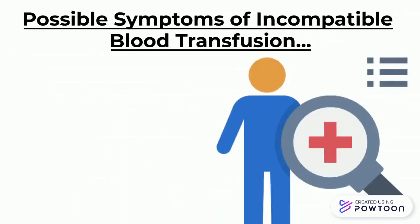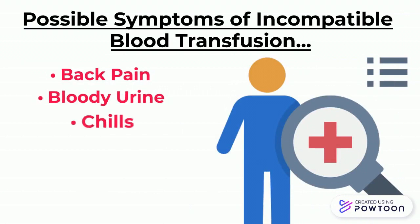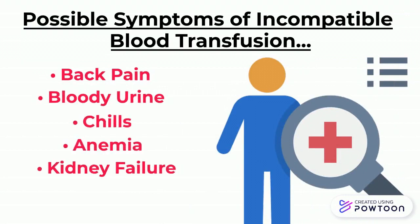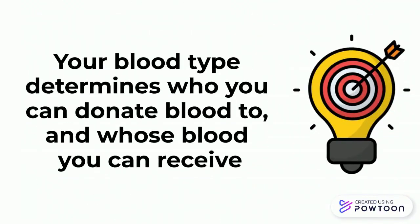Although rare due to medical standards, symptoms of an incompatible transfusion may include back pain, bloody urine, chills, anemia, kidney failure, or even full body shock. Ultimately, your blood type determines who you can donate blood to and whose blood you can receive.